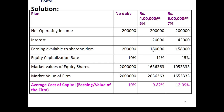Earnings available to shareholders: in Case 1 it is 2 lakh rupees; in Case 2, after deducting interest of 20,000, it is 1 lakh 80,000; in Case 3, after deducting 42,000 interest, it is 1 lakh 58,000. The equity capitalization rate is slowly increasing — 10% in Case 1, 11% in Case 2, 15% in Case 3. Market value of equity shares is calculated as earnings available to shareholders divided by the equity capitalization rate: Case 1 is 2 lakh divided by 0.10, Case 2 is 1 lakh 80,000 divided by 0.11, and Case 3 is 1 lakh 58,000 divided by 0.15.